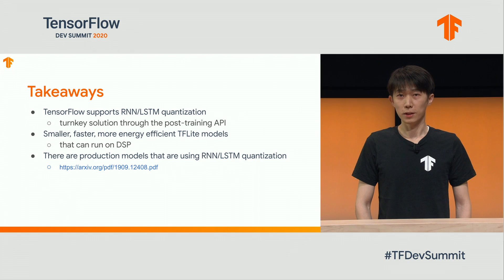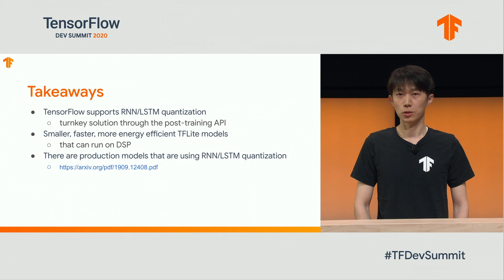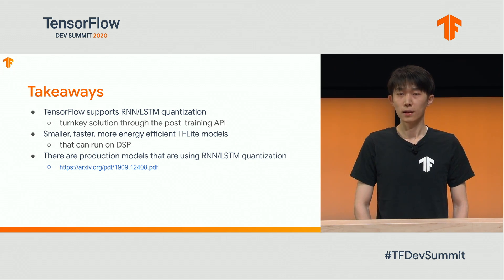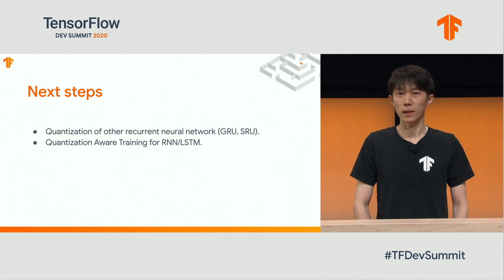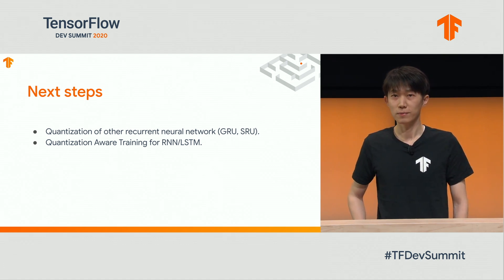Here are the main takeaways: TensorFlow now supports RNN LSTM quantization. It is a turnkey solution through the post-training API. It enables smaller, faster, and more energy-efficient execution that can run on DSP and TPU. There are already production models using this quantization. Please check the link for more details on the use cases. Our next steps are to expand quantization to other recurrent neural networks such as GRU and SRU, and we also plan to add quantization-aware training for RNNs.